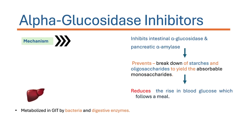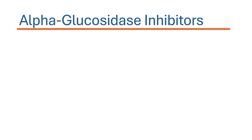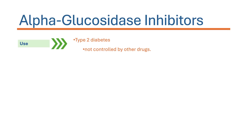Alpha glucosidase inhibitors are therefore very helpful in preventing postprandial hyperglycemia. These drugs are metabolized by gut bacteria as well as digestive enzymes, and they have a half-life of two hours. They are used in the treatment of Type 2 diabetes mellitus not controlled by other groups of drugs.